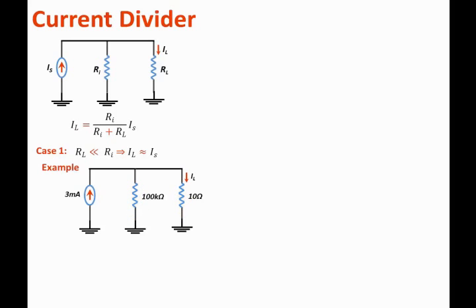By applying the current divider equation, we can state that the load current Il equals the opposite resistance, that is 100k, over the sum of both resistors, which is 100k plus 10 ohms, times the total current, which is 3 milliamps. That is equal to 2.9997 milliamps, which is approximately 3 milliamps.